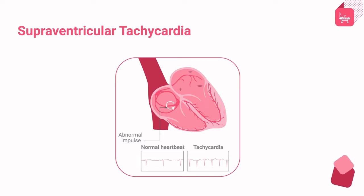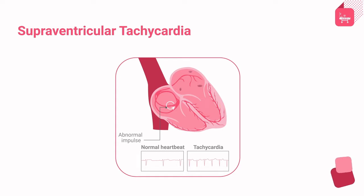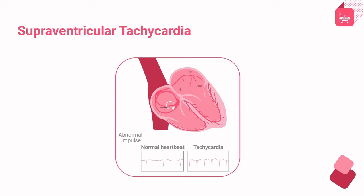Both atrial flutter and atrial fibrillation are supraventricular tachycardias, but because of the differences in their mechanisms and clinical manifestations, they are grouped separately from other types, commonly referred to as paroxysmal supraventricular tachycardia (PSVT). Based on ECG criteria, supraventricular tachycardia can be classified into two types: short RP or long PR interval tachycardia, and long RP or short PR interval tachycardia.